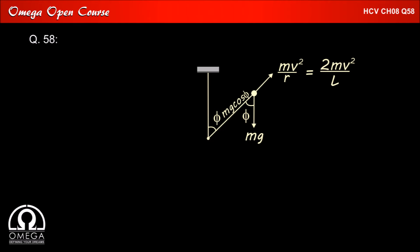Since the string is just slack at this instant it does not apply any tension on the body. Balancing the force along the string we get 2mv squared by L equals mg cos phi, which implies half mv squared equals 1 by 4 mg L cos phi. Now let us look at the energy.